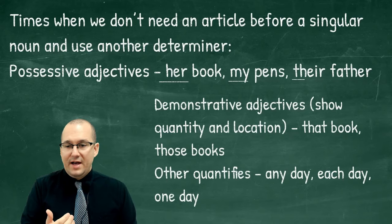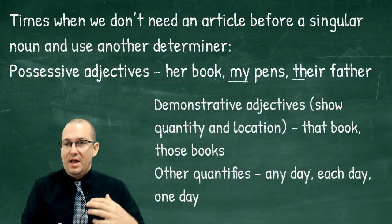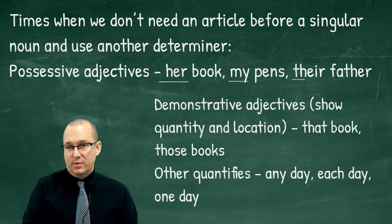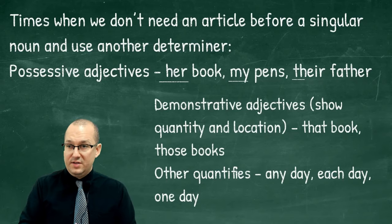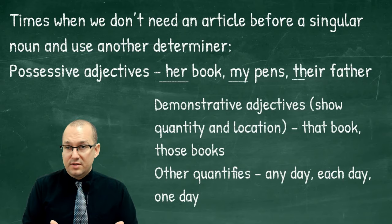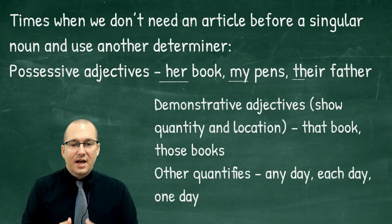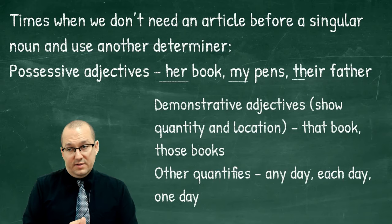Now, demonstrative adjectives show quantity or location. It could be 'that book' or 'those books.' We never say 'a that book' — it's just 'that book,' 'this book,' 'those books,' 'this thing.' There's no 'a' before demonstrative adjectives. The same applies to other quantifiers — grammatical words like 'any day,' 'each day,' 'one day.' There's no 'a' before these words.